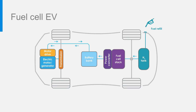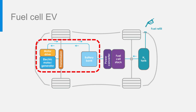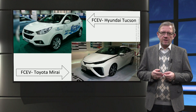Next we look at a fuel cell electric vehicle. A fuel cell electric vehicle substitutes the larger battery of a battery electric vehicle for a fuel cell stack to generate electricity from hydrogen fuel. Unlike a battery, a fuel cell is not a storage device but a component that produces direct current from a chemical reaction. A small battery is still used as an energy buffer to power the electric motor using the motor drive. A fuel cell vehicle has the advantage of short refueling times and extended driving range when compared with a battery electric vehicle. Two examples are the Hyundai Tucson and the Toyota Mirai.